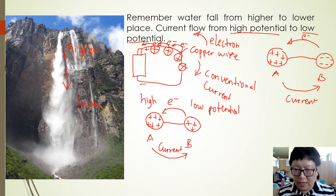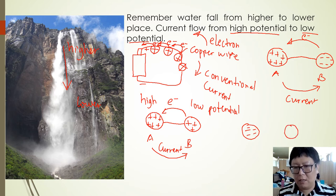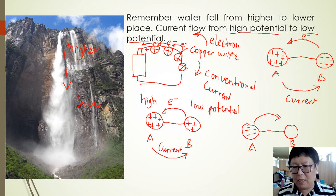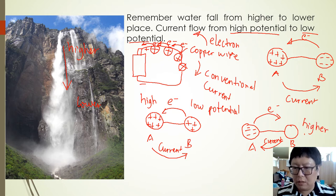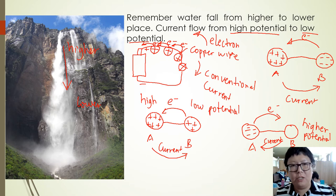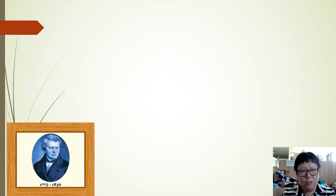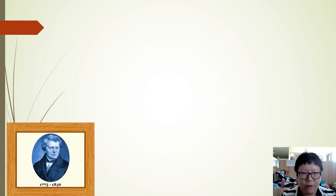What if the object is negatively charged and we connect it to a neutral object? A has more electrons than B, so the electrons will move from A to B. But the current will move from B to A — B is the higher potential. Remember: current always flows from high potential to low potential. Even though we assume current flows from positive to negative or high to low potential, the current is caused by the flowing of electrons.